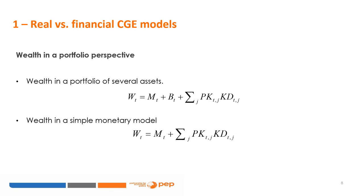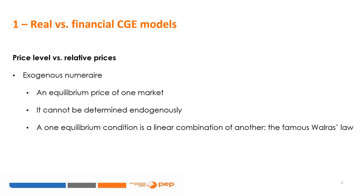In the first step, we will simply introduce money as a substitute to retain real assets in our portfolio. In our definition of wealth, we withdraw government bonds from the portfolio. In real models, we have to choose one exogenous numeraire — one equilibrium price or a price index needs to be fixed as the numeraire, and the corresponding market equilibrium condition becomes redundant. All other equilibrium prices are relative to the numeraire and are therefore real prices. The price level is unknown, so there is no inflation.